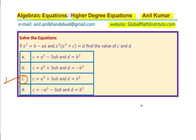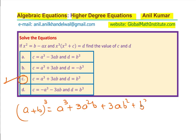I hope you understand and appreciate the strategy — it is very tricky. We applied the formula (a + b)³ = a³ + 3a²b + 3ab² + b³, and then wrote both equations as polynomials of degree 6, which allowed us to compare and find the solution.